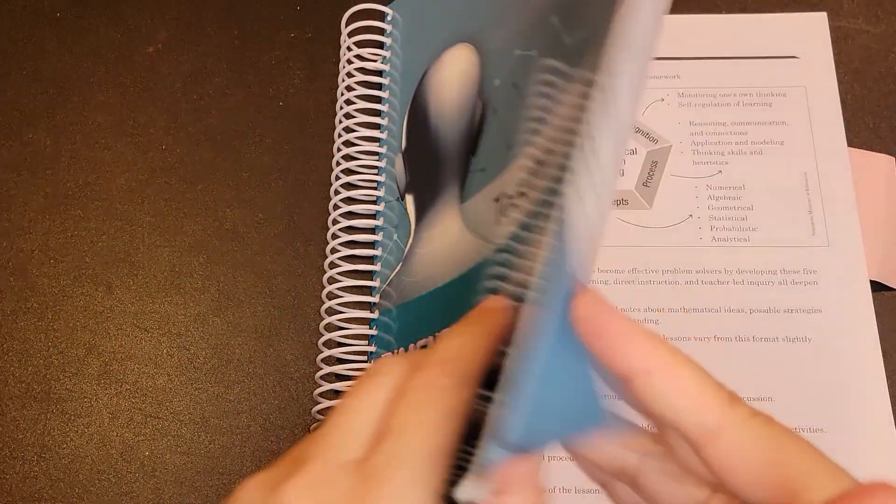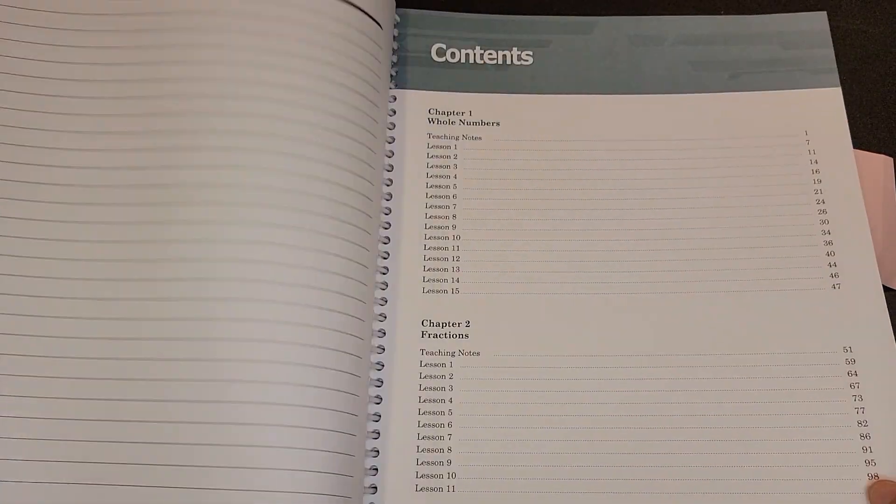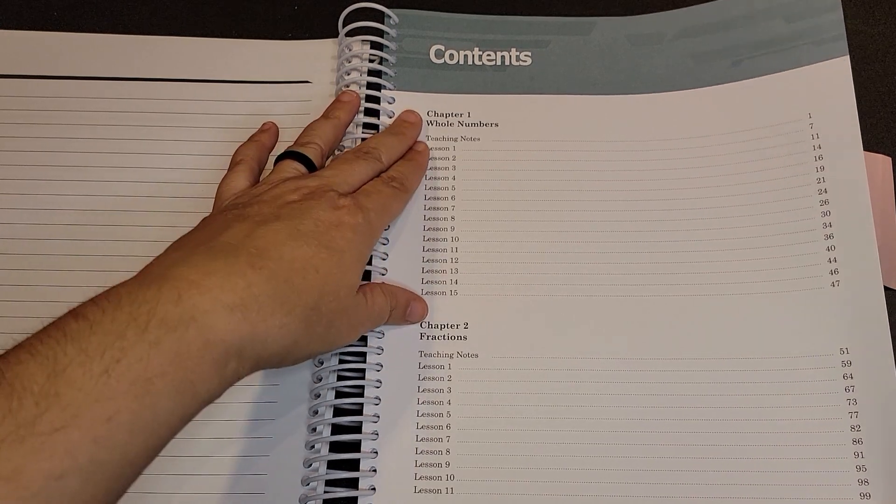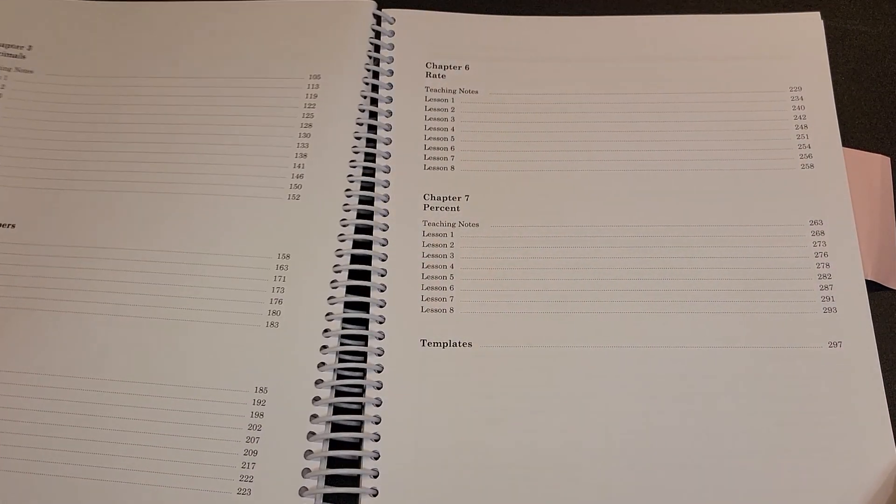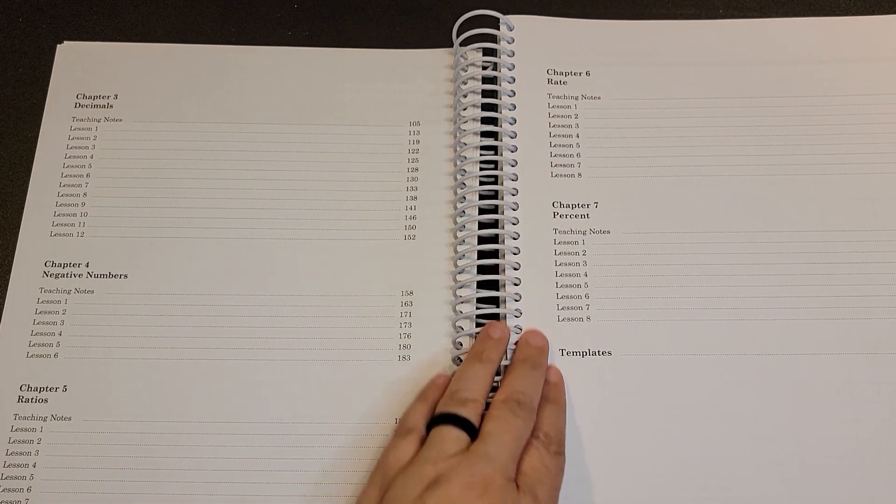Singapore Dimensions for level six continues with the Singapore framework that we have seen before. Within level 6A we'll be talking about whole numbers, fractions, decimals, negative numbers, ratio, rate, and percent.